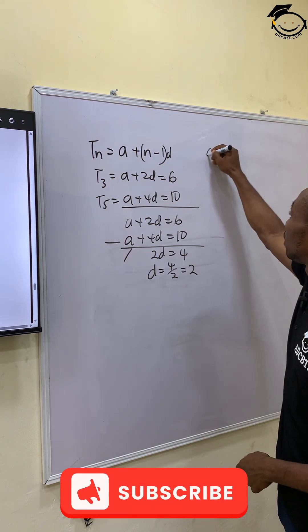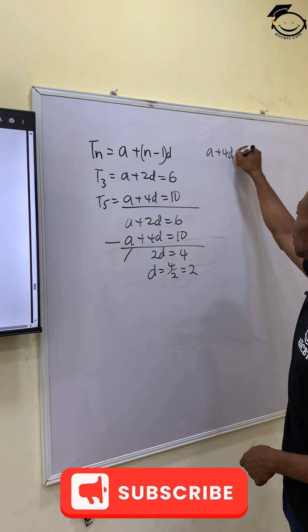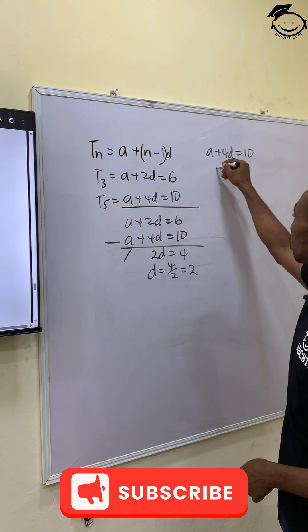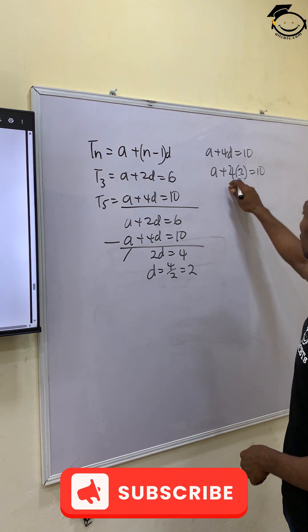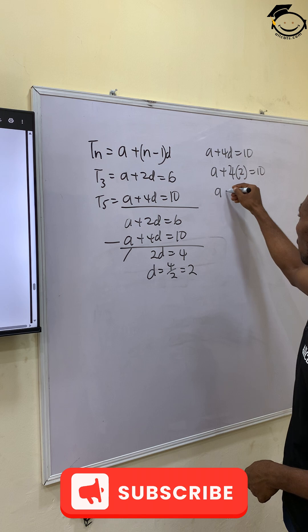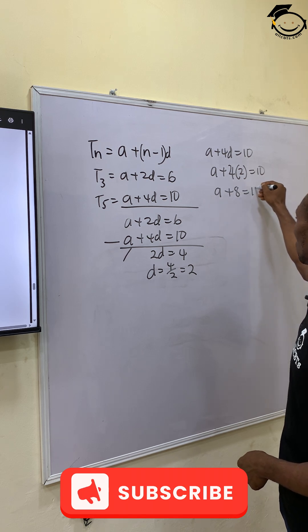Now substituting the value of D into one of our equations, we have A plus 4D equals 10. This becomes A plus 4 times 2 equals 10. 4 times 2 gives 8, so A plus 8 equals 10.